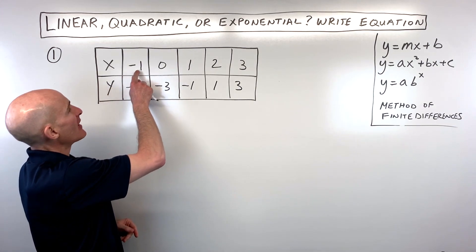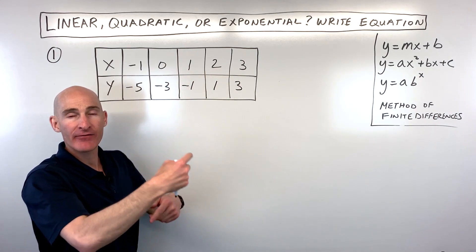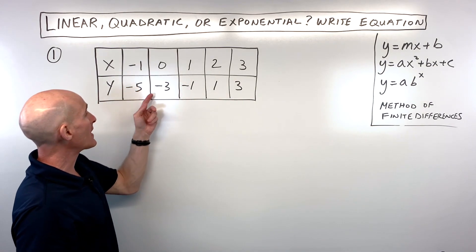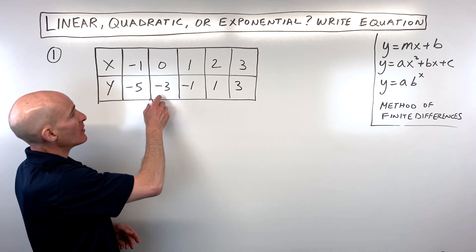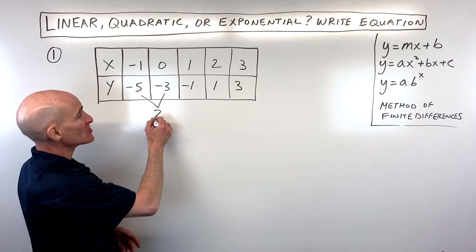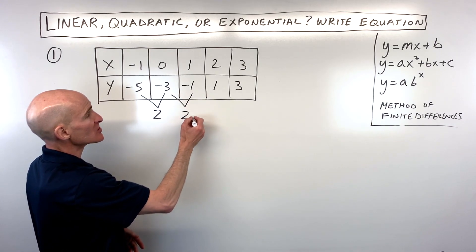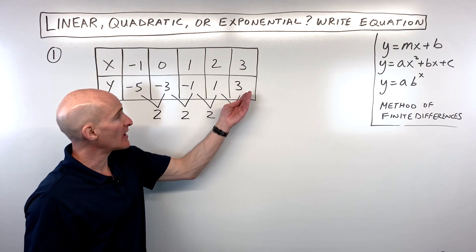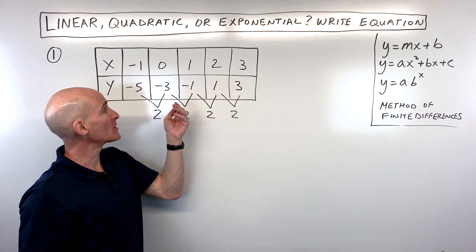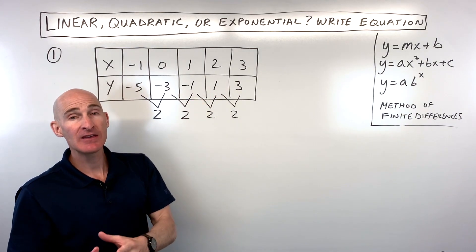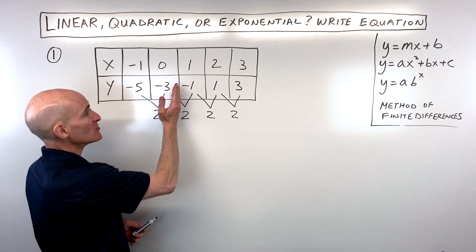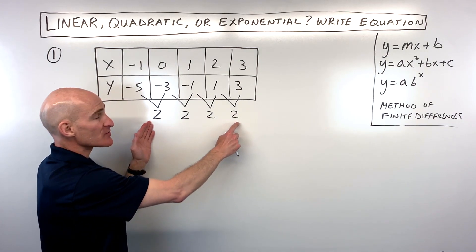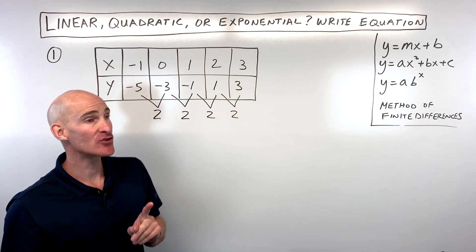You can see here that the x values are consecutive, meaning one after another. When they're like that we can use a technique called the method of finite differences with the y coordinates. We subtract consecutive y values: negative three minus negative five is two, negative one minus negative three is two, one minus negative one is two, and three minus one is two. If you get the same number the first time you subtract, that tells you it's a first degree equation.